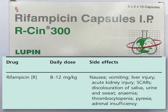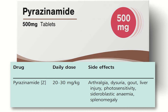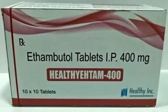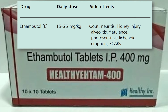Rifampicin side effects include nausea, vomiting, liver injury, acute kidney injury, severe cutaneous adverse reaction (SCAR), discoloration of saliva, urine and sweat, anemia, thrombocytopenia, pyrexia, and adrenal insufficiency. Pyrazinamide is given at 20 to 30 mg/kg daily; side effects include arthralgia, dysuria, gout, liver injury, photosensitivity, sideroblastic anemia, and splenomegaly. Ethambutol daily dose is 15 to 25 mg/kg; side effects include gout, neuritis, kidney injury, alveolitis, flatulence, photosensitivity, lichenoid eruption, and severe cutaneous adverse reaction.